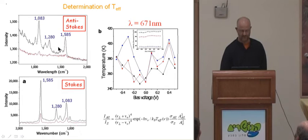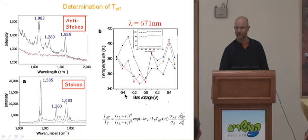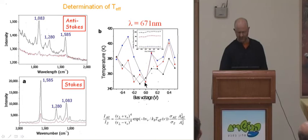Here is the anti-Stokes signal — proportional to the excited vibrational modes — and here is the Stokes signal, the overall vibrational modes inside the junction. When we extract using the appropriate theory, we get the effective temperature as a function of bias. The different lines correspond to three different modes. We can see what is happening to the three modes as we pass current through the molecule. We start at a certain temperature at zero bias — the temperature of the junction under the laser beam — and as we apply bias, the temperature of the modes increases.